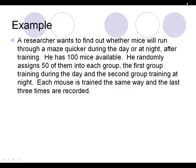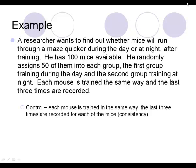Here's an example. A researcher wants to find out whether mice will run through a maze quicker during the day or at night after training. He has 100 mice available and randomly assigns 50 of them to each group: the first group training during the day, the second group training at night. Each mouse is trained the same way, and the last three times are recorded. Let's look through control, randomization, and replication.